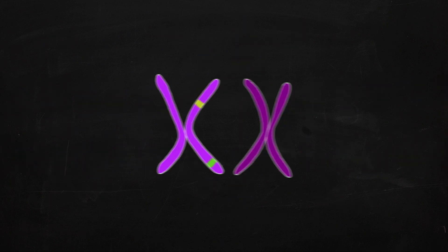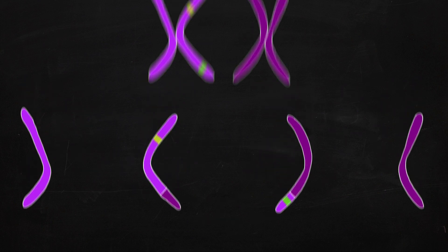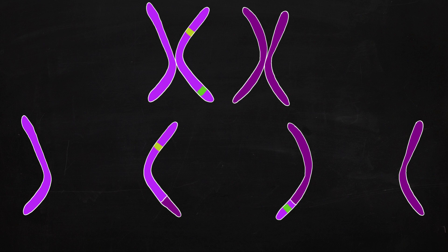During meiosis, the two chromosomes of a pair kind of swap some bits of DNA before going to different sperms and eggs. This is crossing over. This is what allows us to look at different genes on the same chromosome as being separate.